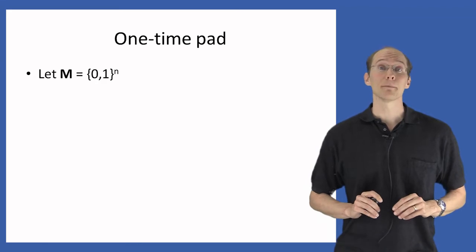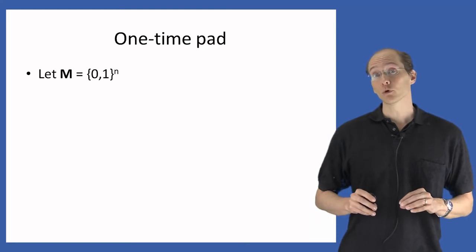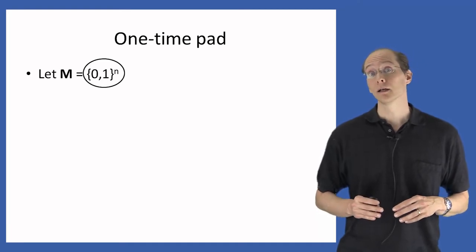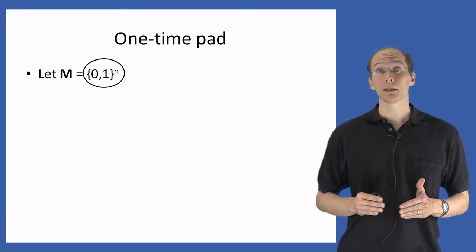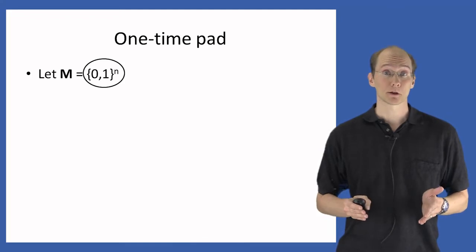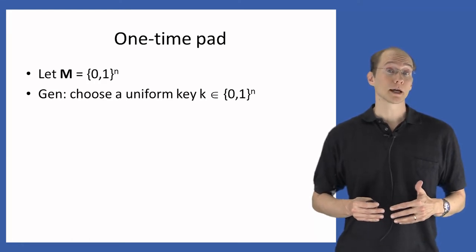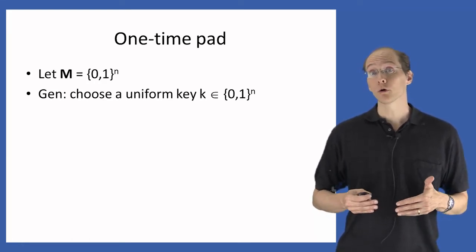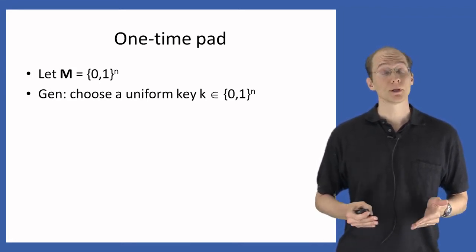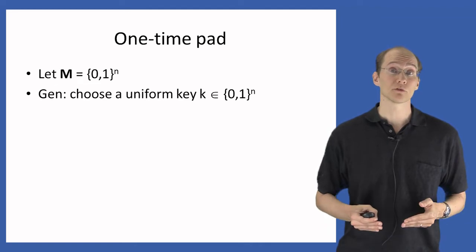Here's the one-time pad encryption scheme. First, we let our message space be equal to {0,1}^n. This notation means the set of all binary strings of length exactly n — the set of all n-bit strings. The key generation algorithm will choose a uniform key k also from the set of all n-bit strings. Each possible n-bit string is chosen with probability 1 over 2^n, and there are 2^n different strings of length n.